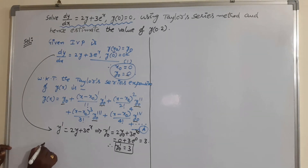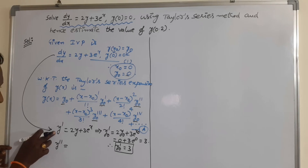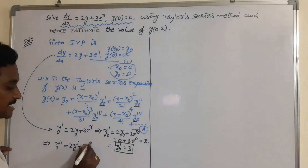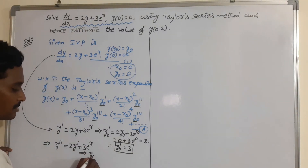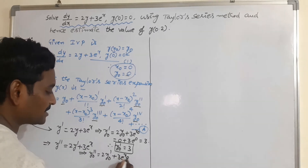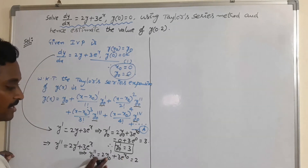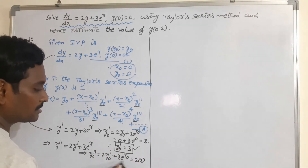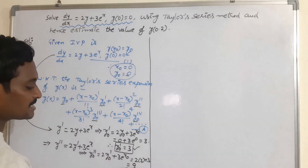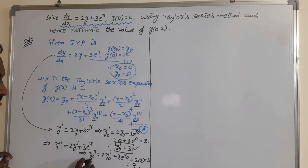Now we have to find another derivative. Taking the derivative of y' = 2y + 3e^x with respect to x gives y'' = 2y' + 3e^x. So y₀'' = 2y₀' + 3e^(x₀). Replace the values: y₀' = 3, so 2 times 3 plus 3 times e^0 = 6 + 3 = 9. This is the value of y₀''.